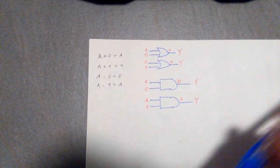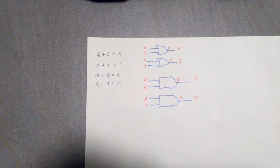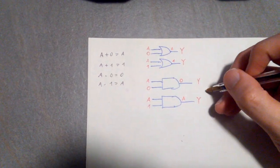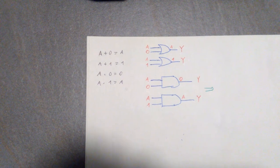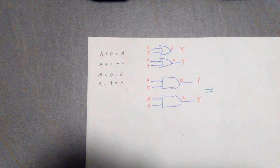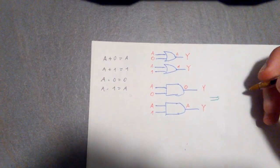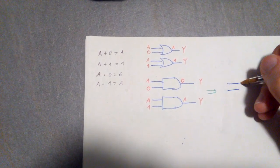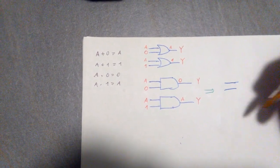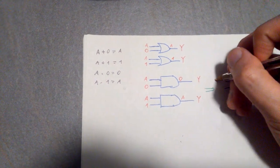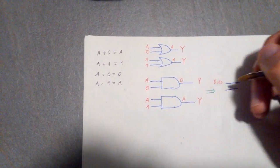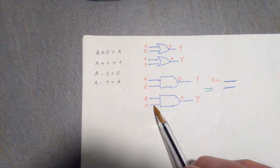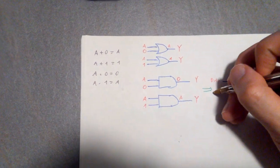Now, this is actually particularly useful because you can use those two properties to have an enable line. So for instance, if we still have those two inputs, but instead of calling it A, we are going to call this data, and instead of calling this 0 or 1, we're going to call this enable.